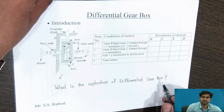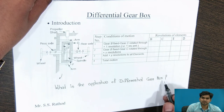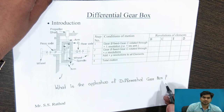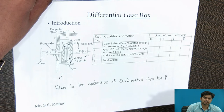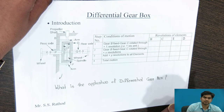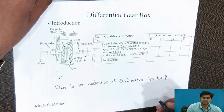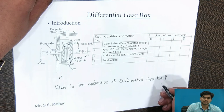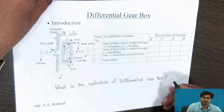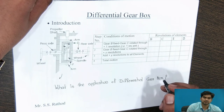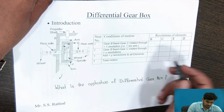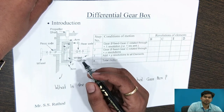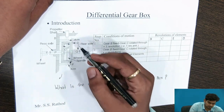In automobiles, the Differential Gearbox is used. Because when taking a turn, the outer wheel travels a greater radius or distance than the inner wheel. At that time, we require speed variation between the two wheels — the inner wheel and the outer wheel — and that is achieved by using the Differential Gearbox.